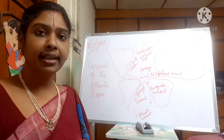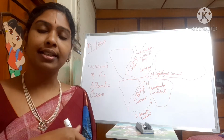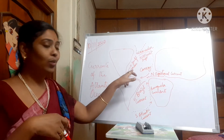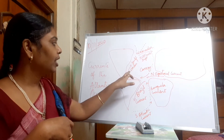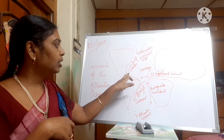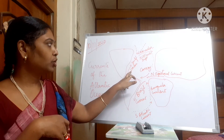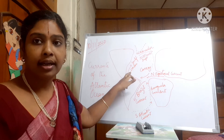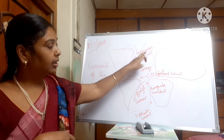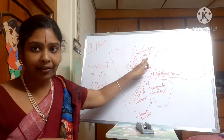Now let's see the currents of different oceans. The first one is the currents of the Atlantic Ocean. The first current is the Gulf Stream, which originates from the Gulf of Mexico. Since it originates from the Gulf of Mexico, the Gulf Stream is a warm current and is one of the biggest streams of the Atlantic Ocean.